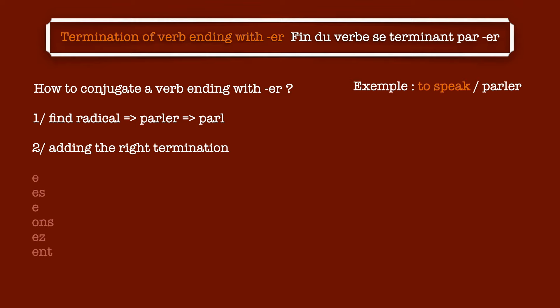Alright, so here is an example with the verb 'speak' that we have seen before. We are going to start with the first person singular. We write the first subject personal pronoun, then the radical of the verb, and we add the termination of the first person singular, so we obtain 'Je parle.' If the pronunciation is hard for you at the moment, don't worry, there will be phonetics videos in my channel. We follow the same process for the second person singular and we obtain 'Tu parles.' If you want to try to find the next ones, you can pause the video and write in a comment below what you think is the right answer.